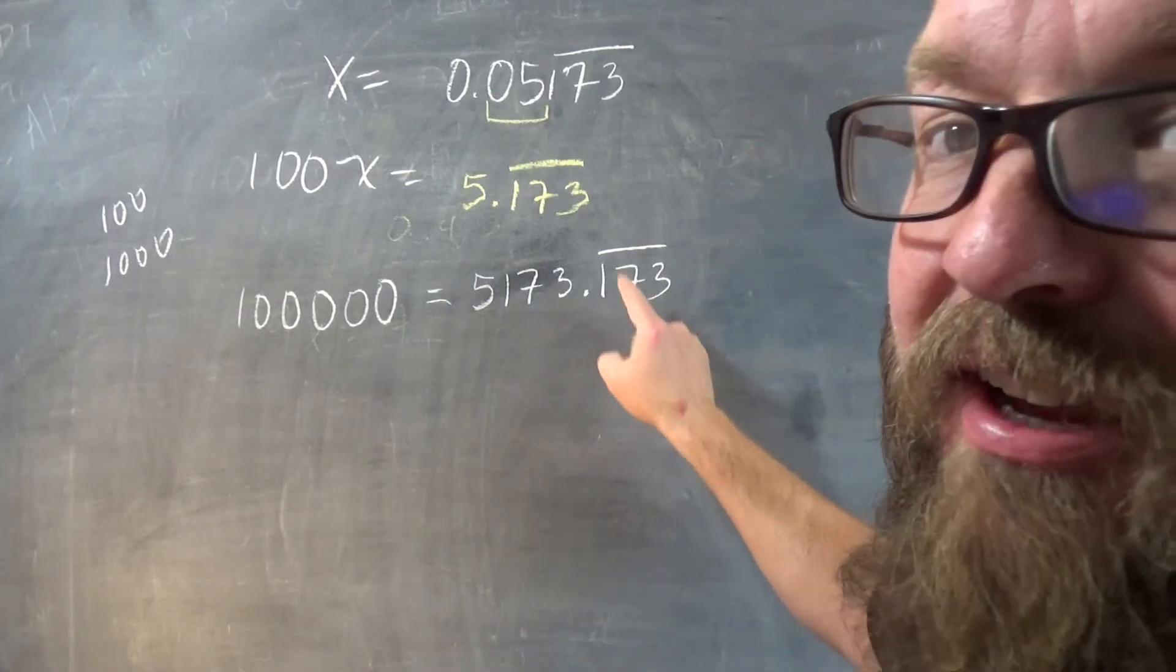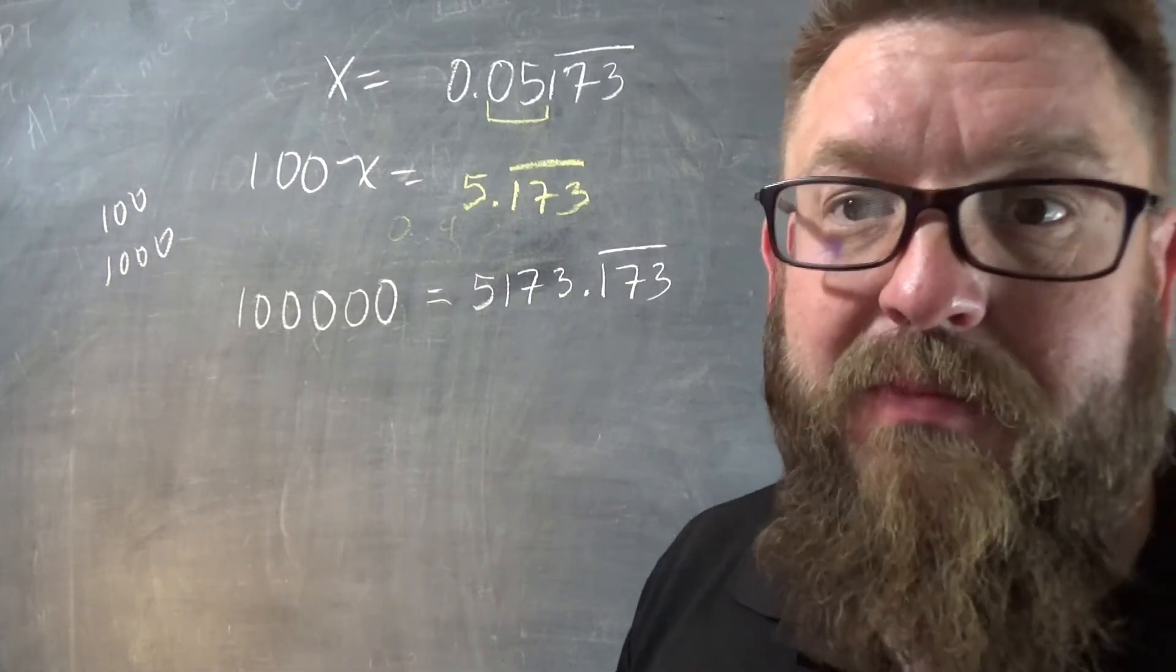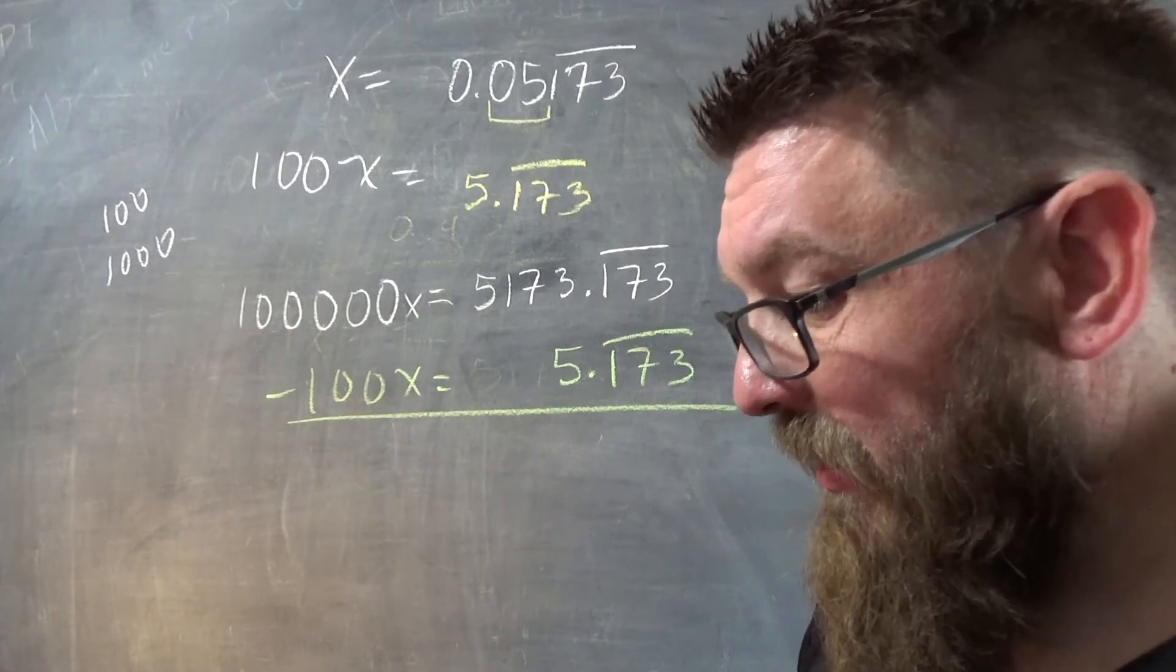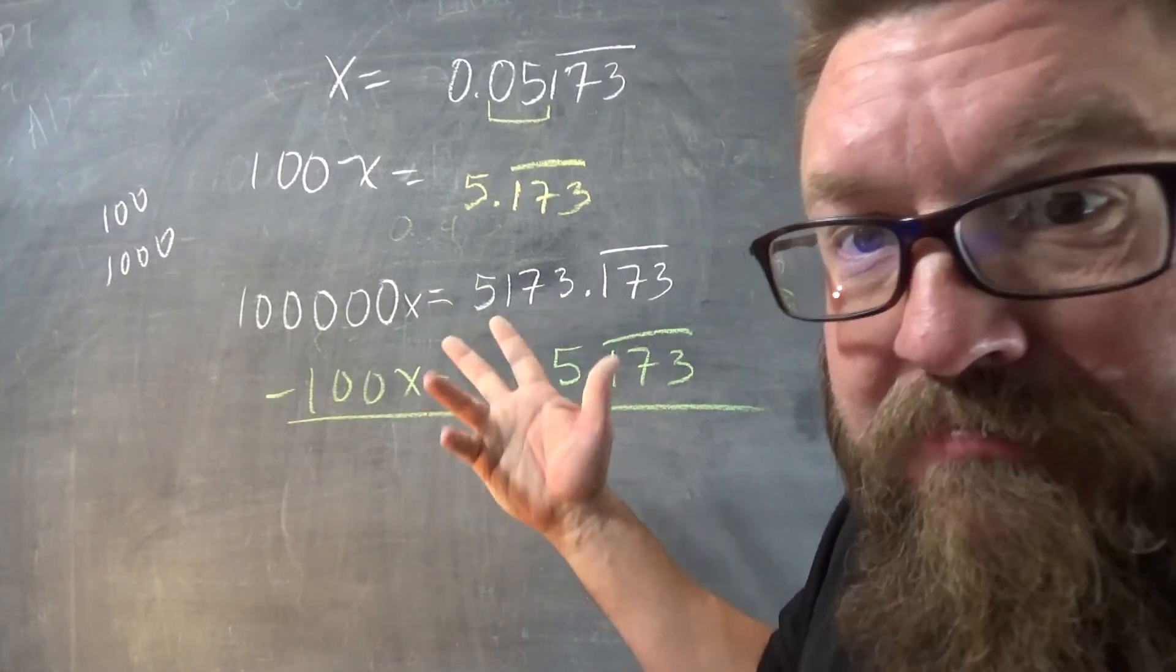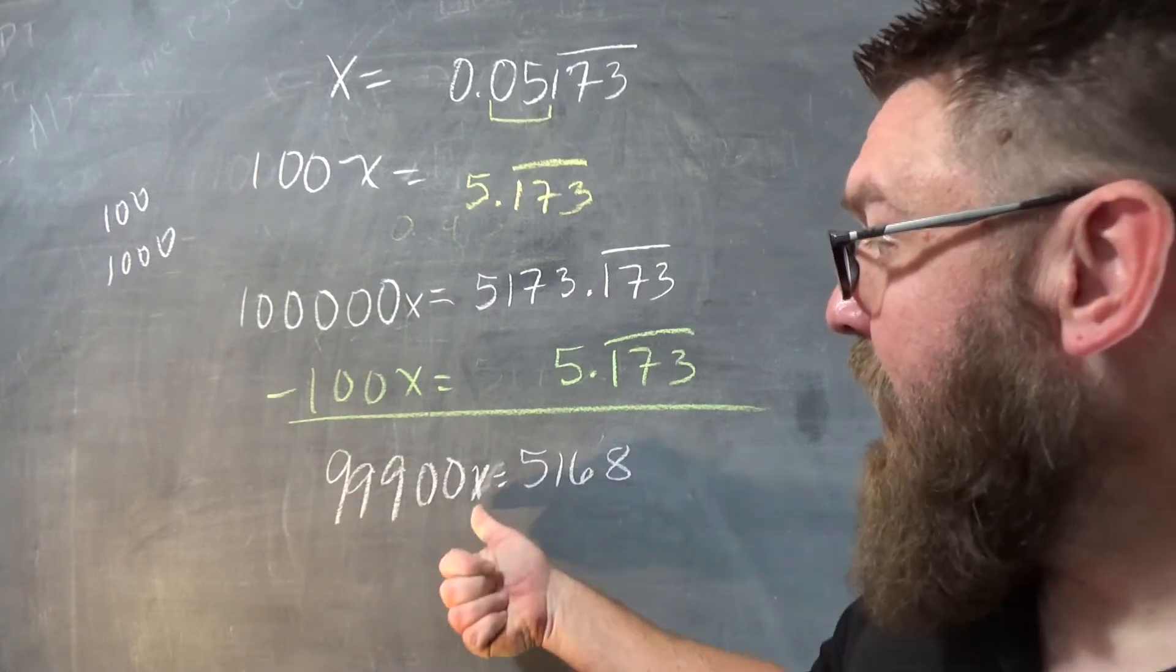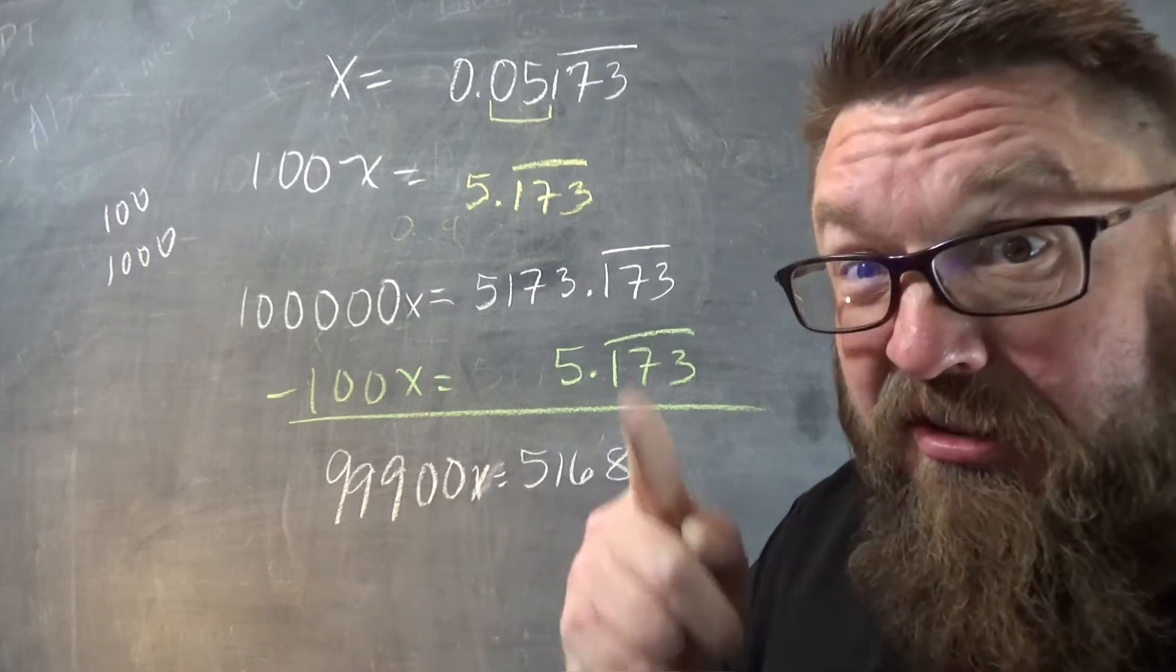We want to get rid of this thing right here. And when we subtract these two, that decimal, that repeating decimal is going to be zero. All right. So this one minus this one, doing a little calculation right here. Nine, nine, nine, zero, zero times X equals that. So X will be the fraction of this divided by that. All we got to do is reduce. Turns out four goes into both, but you know, so there we go.